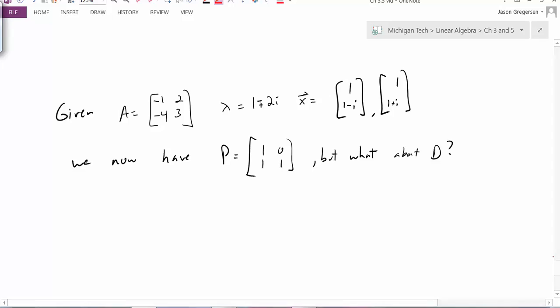But now that I have my matrix P, and once again once I have that I can calculate the inverse, I still need to figure out what D is. I don't want to just have a diagonal matrix with the eigenvalues on those diagonal entries.